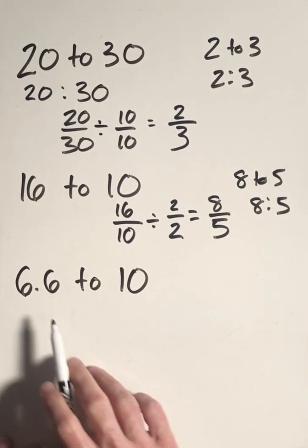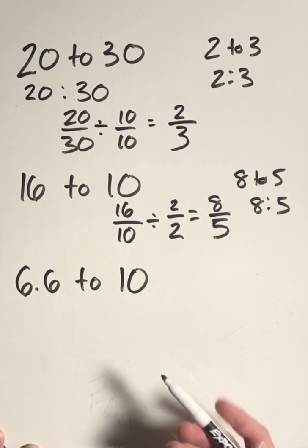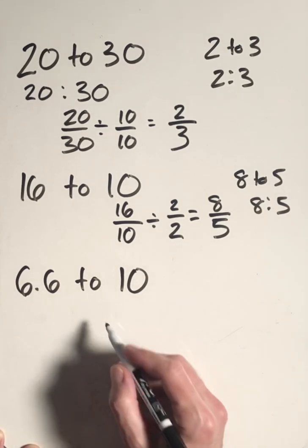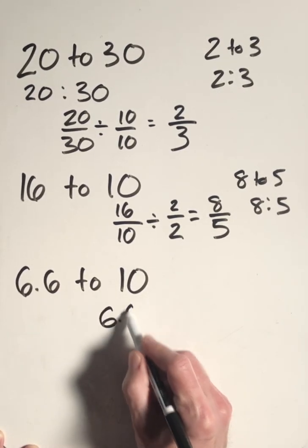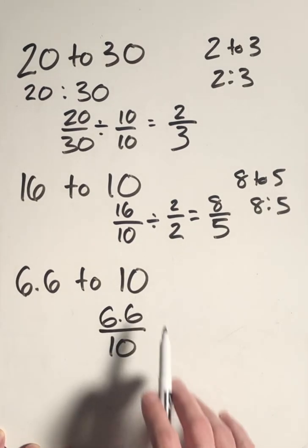Now here, when one of our numbers has a decimal point in it, we're going to have to make a little adjustment. So if we have 6.6 to 10, we can write the first number in the ratio as the numerator of the fraction, and the denominator would be the second number.